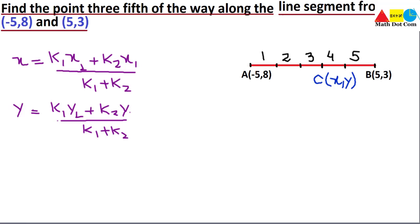Now let's identify what is given. Since C divides the line segment in a 3/5 ratio, it has divided the segment into 3 ratio 2 — with 3 parts on one side and 2 parts on the other. So k1 = 3 and k2 = 2.